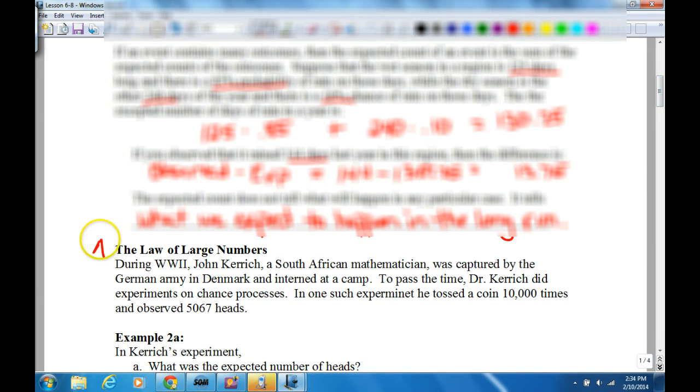So, this is one of the important laws right here, the law of large numbers. During World War II, John Kerrick, a South African mathematician, was captured by the German Army in Denmark and interned at camp. To pass the time, he did experiments on science processes. In one such experiment, he tossed a coin 10,000 times and observed 5,067 heads.